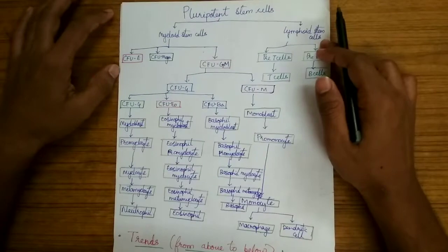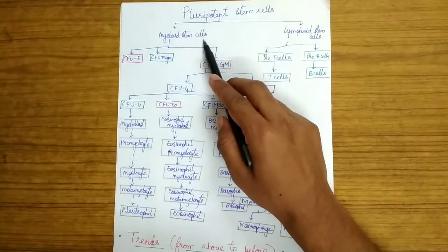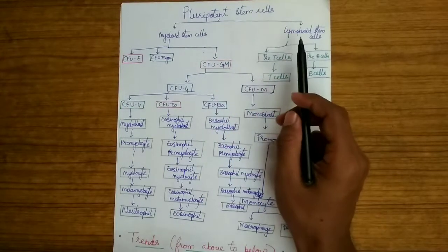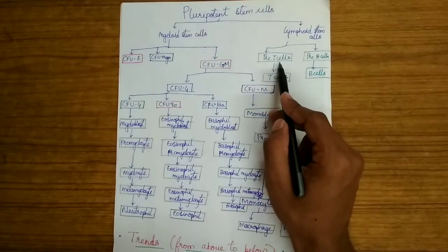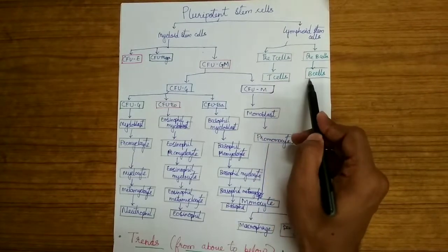This is an important flowchart to remember to understand the topic thoroughly. The pluripotent stem cells give rise to myeloid stem cell and lymphoid stem cell. The lymphoid stem cells give rise to pre-T cells and pre-B cells which give rise to T cells and B cells correspondingly.